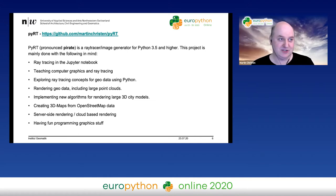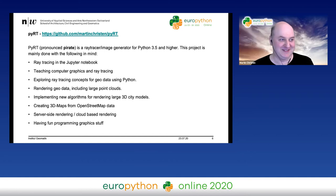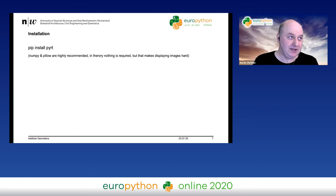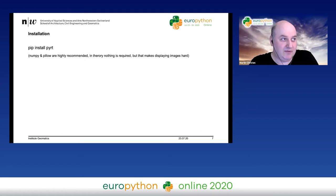We actually used a modified version of PIRATE already to render large 3D city models, and we can also use OpenStreetMap data to create maps. If you're interested, you can contact me. Installation is quite easy — I only have a pip installation at the moment. You can use Conda and pip together. It has no dependencies; you just run `pip install pyrt` and it works without any additional modules.